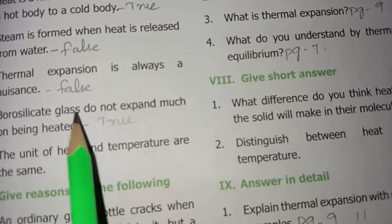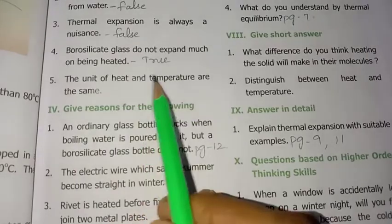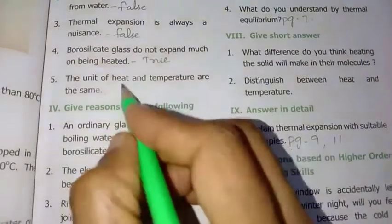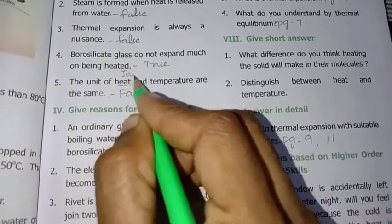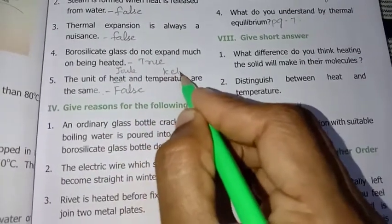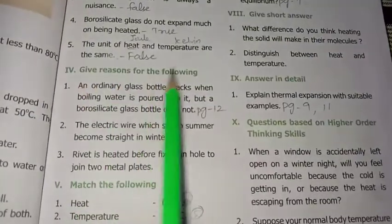Borosilicate glass does not expand much on being heated - true. Fifth one, the unit of heat and temperature are the same - this is false. For heat it's Joule, for temperature it's Kelvin, so they are different, not the same. Next, give reason for the following.